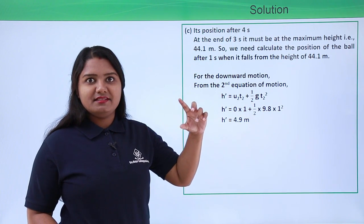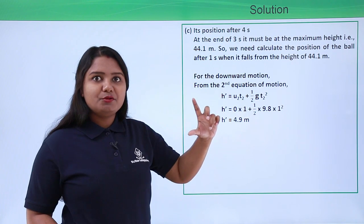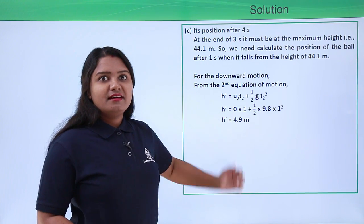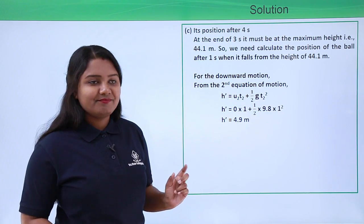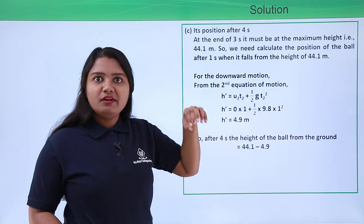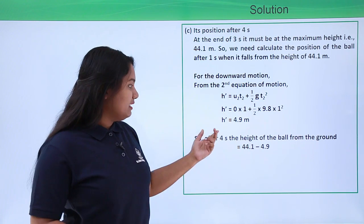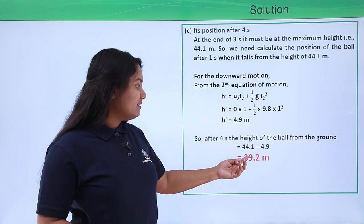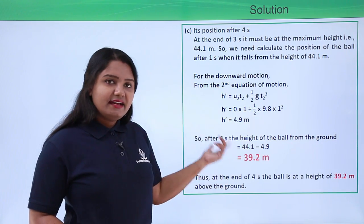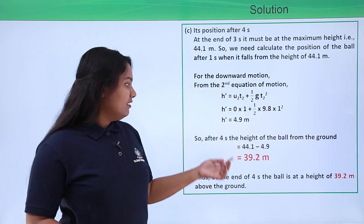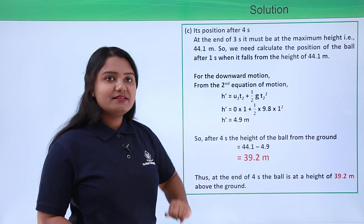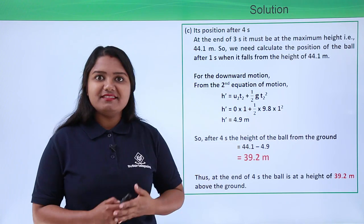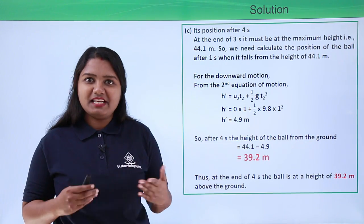The ball has covered 4.9 meters downward during the fourth second. The height at the end of 4 seconds is found by subtracting this from the maximum height: 44.1 minus 4.9 equals 39.2 meters. So at the end of 4 seconds, the ball is at a height of 39.2 meters above the ground. This solves the problem. Thanks for watching.